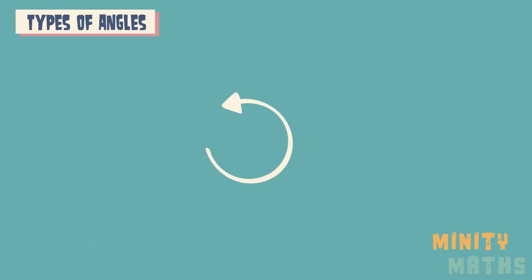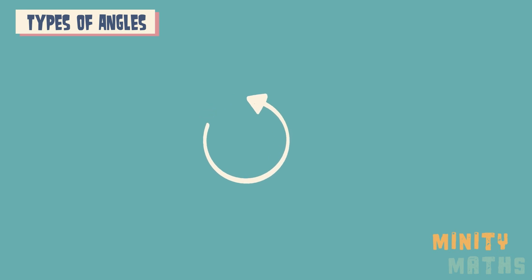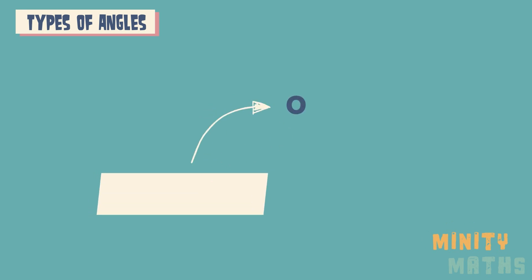An angle is a measure of rotation and can be measured in degrees, which is represented by this symbol.